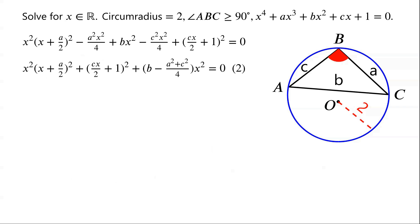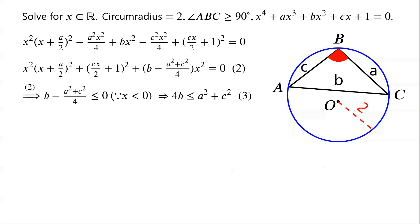The first two terms on the left side of equation 2 are two squares, so they must be greater than or equal to 0. This implies that the last term on the left side of equation 2 must be less than or equal to 0. We have already known that x is less than 0, so x squared does not equal 0. Therefore, b minus (a squared plus c squared) over 4 must be less than or equal to 0. This implies that 4b is less than or equal to a squared plus c squared.